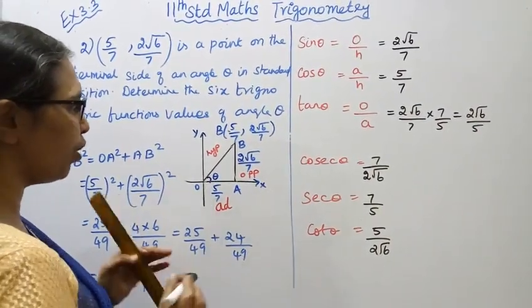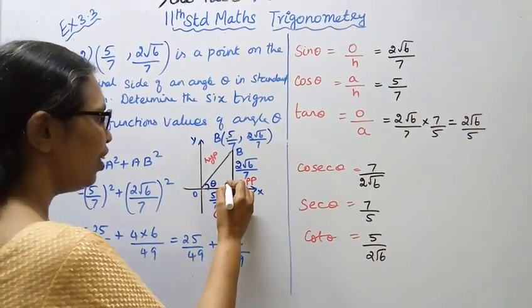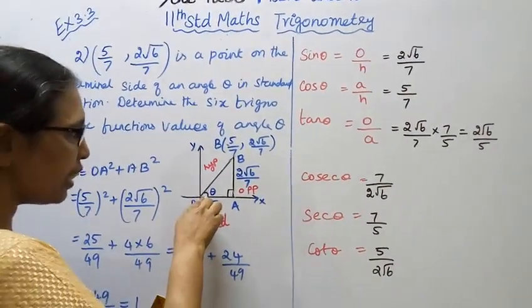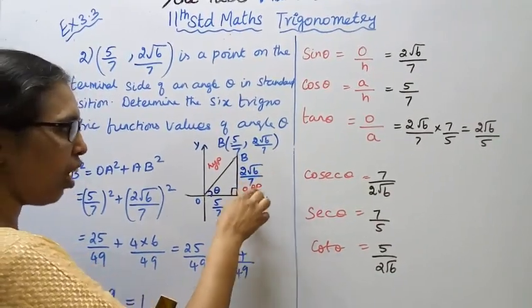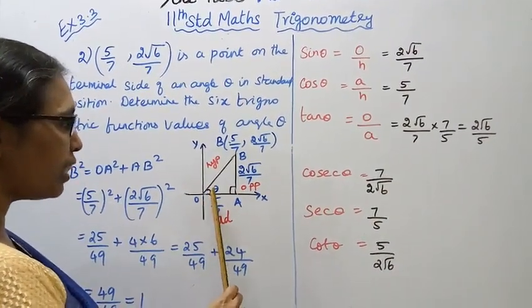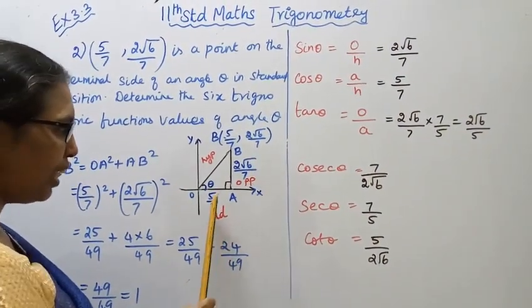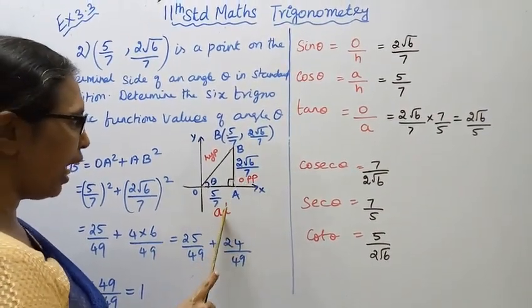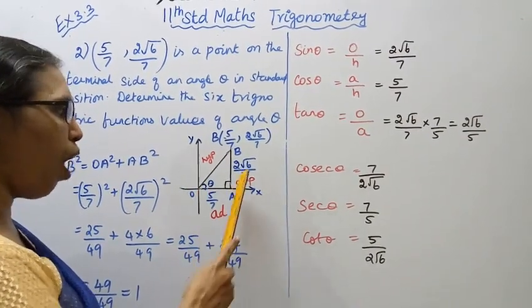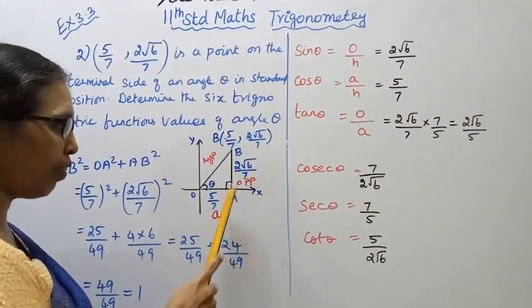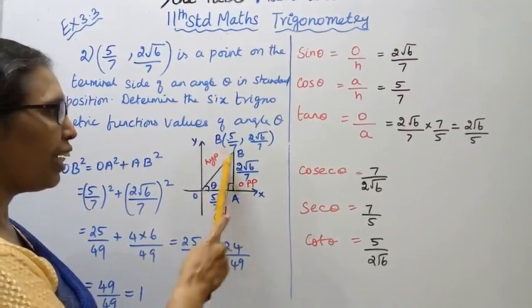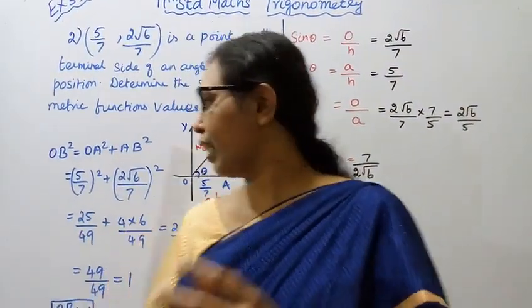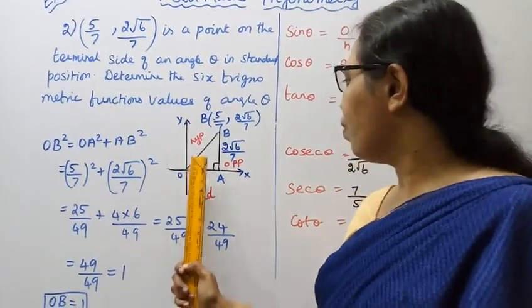We draw a right angle triangle. For angle theta, the opposite side is 2√6/7, the adjacent side is 5/7, and we need to find the hypotenuse.